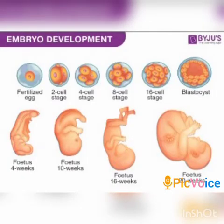In our previous class, we discussed about fertilization. You know what is meant by fertilization — it is a fusion of male and female gametes to form a single cell. What is the name of that cell? Zygote. So the single cell produced is called zygote. Then after fertilization, the zygote undergoes cell division.